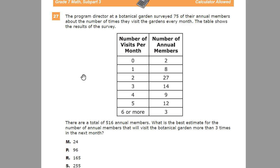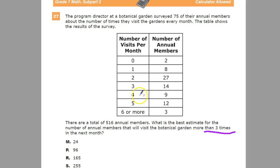Based on that sample, we can extrapolate — we take that information and apply it to the 516. That means we have three pieces of information: the number of people, the number that fall into our group of more than three times, and the total. We have two concepts: the sample group versus the larger population group. That means we can set up a proportion. But first we need to figure out how many in the sample group went more than three times, so we just find numbers that are more than three.